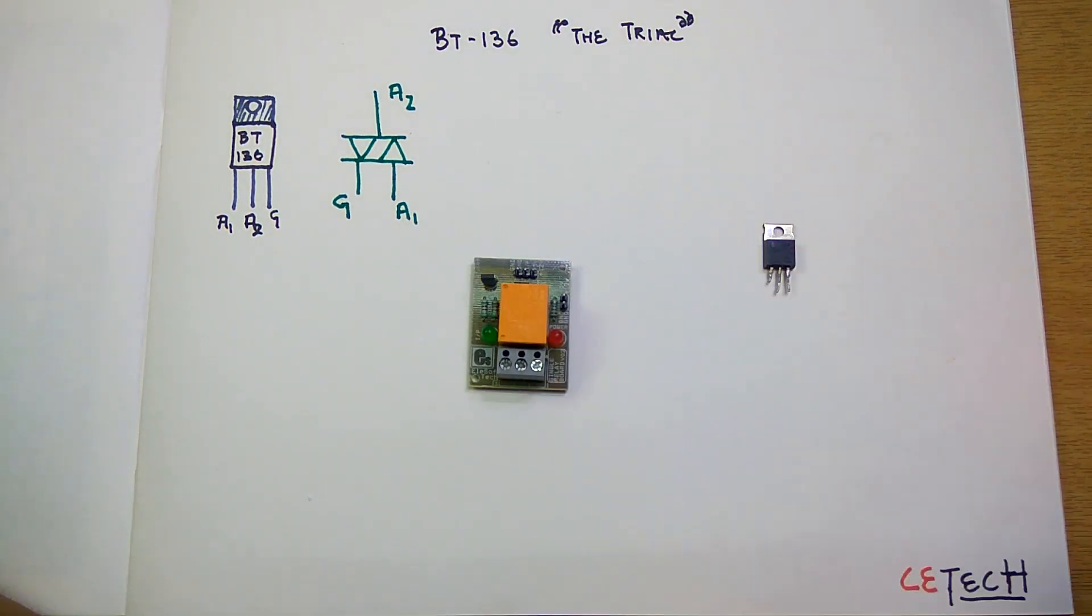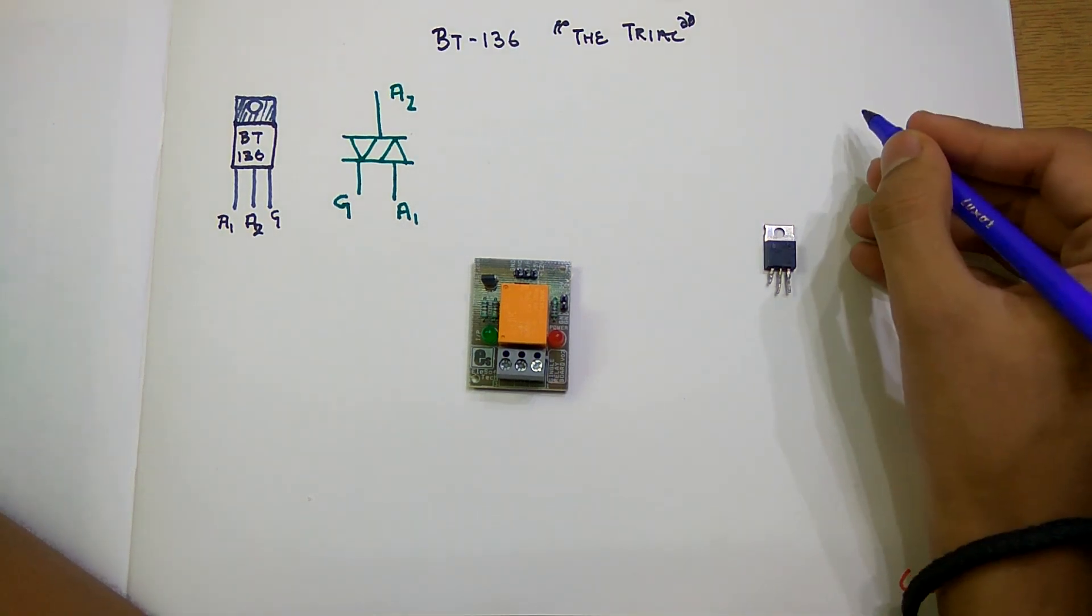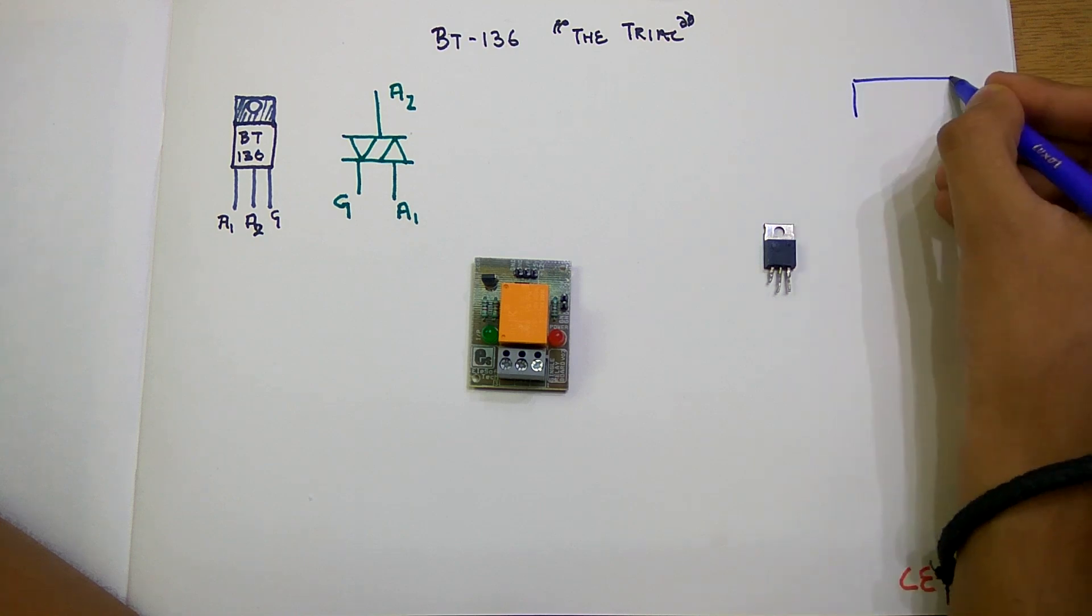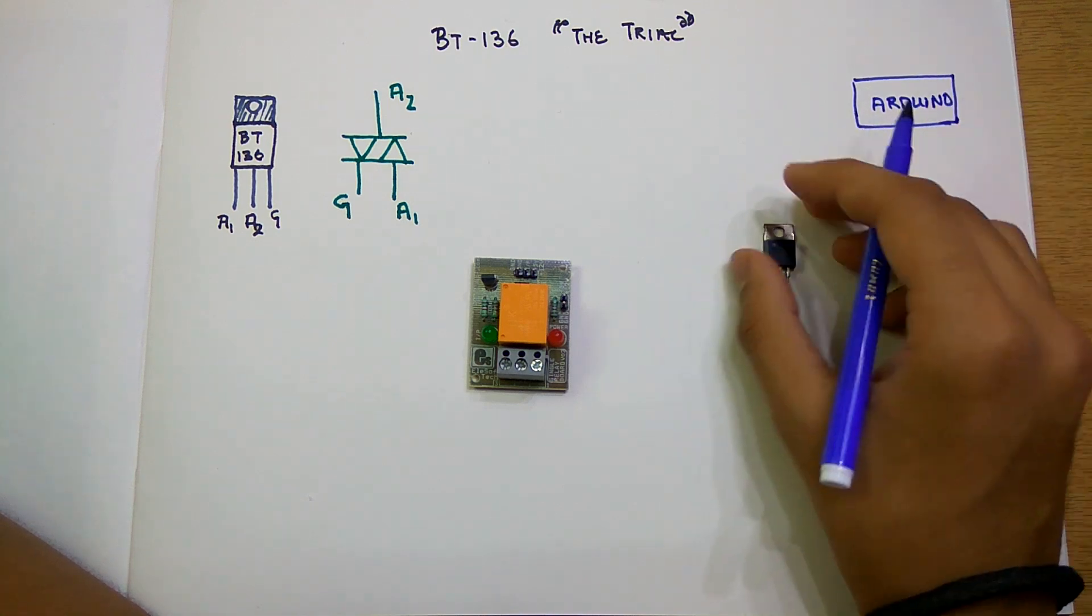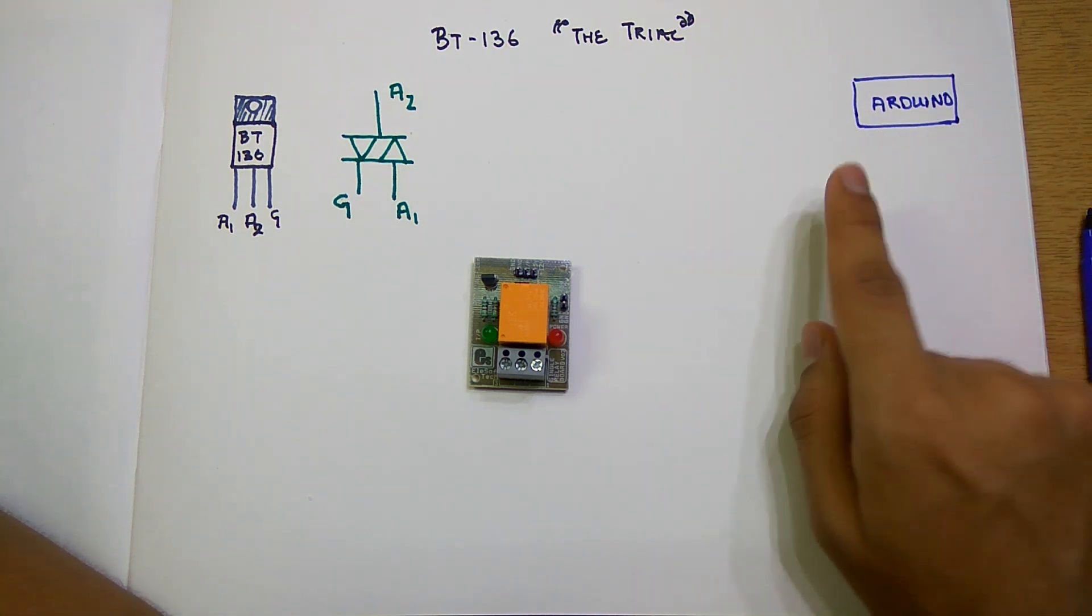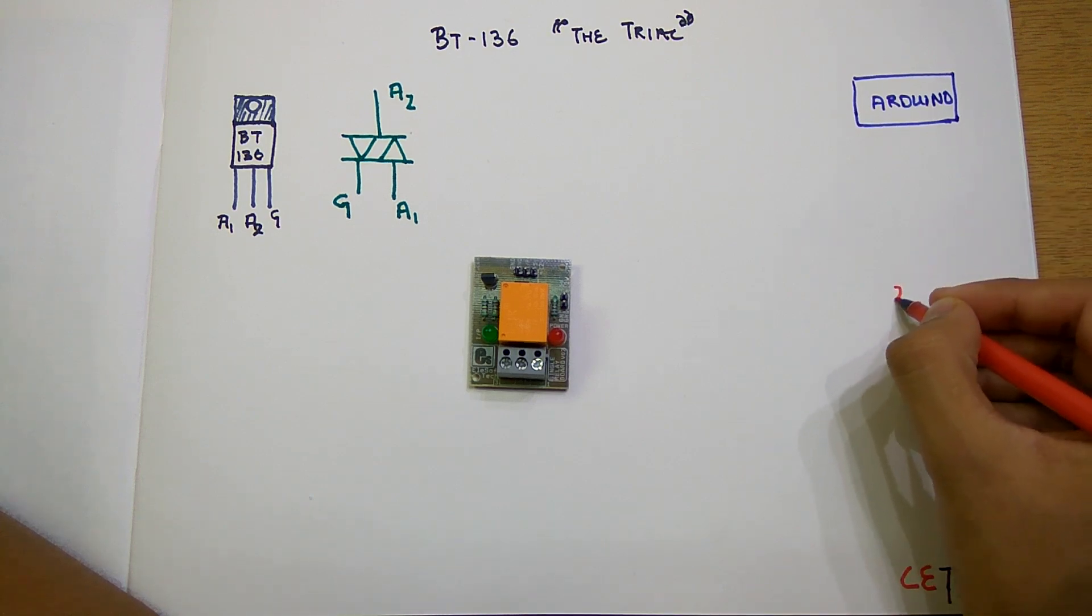Suppose we have to make a project. Let me make some schematics right here. For example, we have an Arduino, and we have to interface this Arduino with a 220 volt lamp.